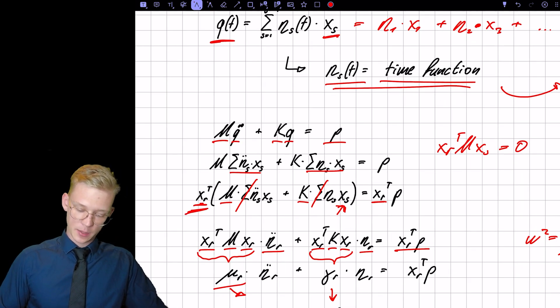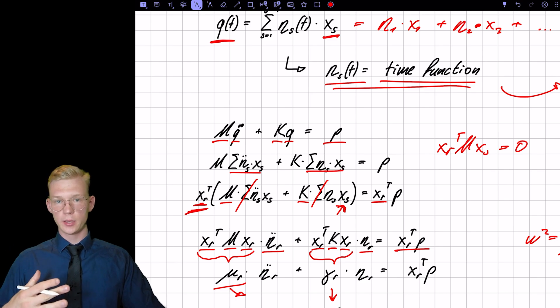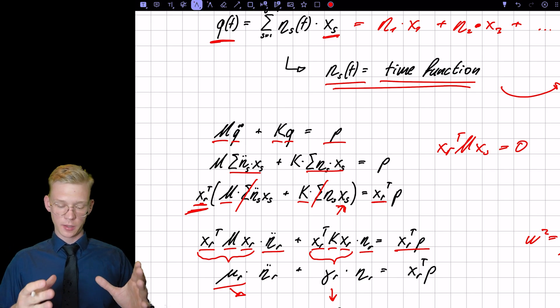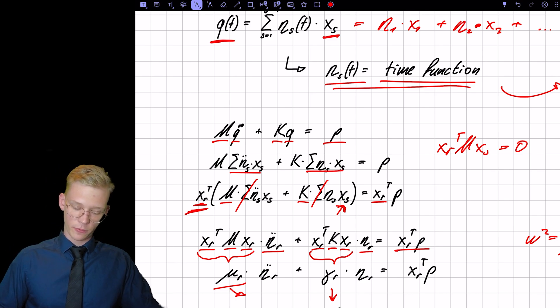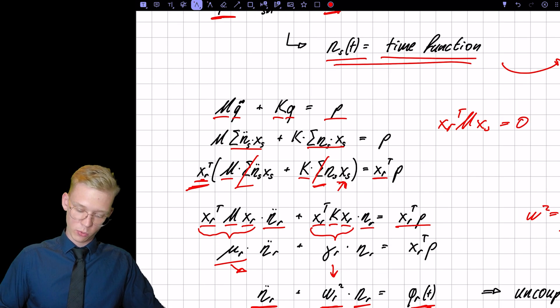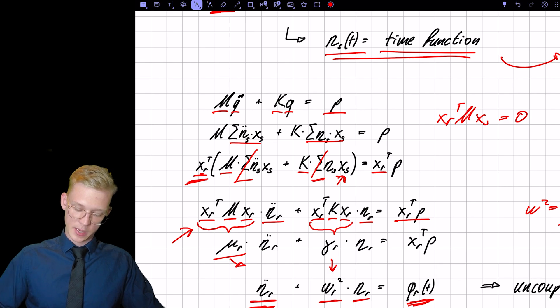And because we have mode orthogonality, all the modes that are not this mode that we project on, they will fall away. And that's how we get rid of the coupling. So we're only dependent on XR.